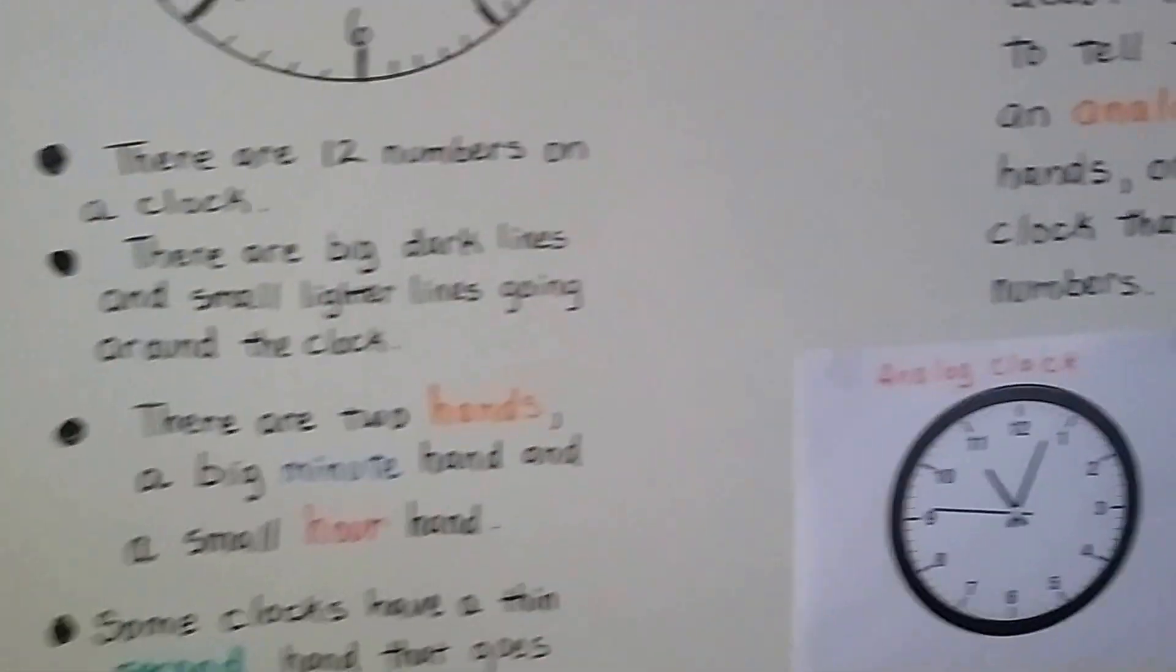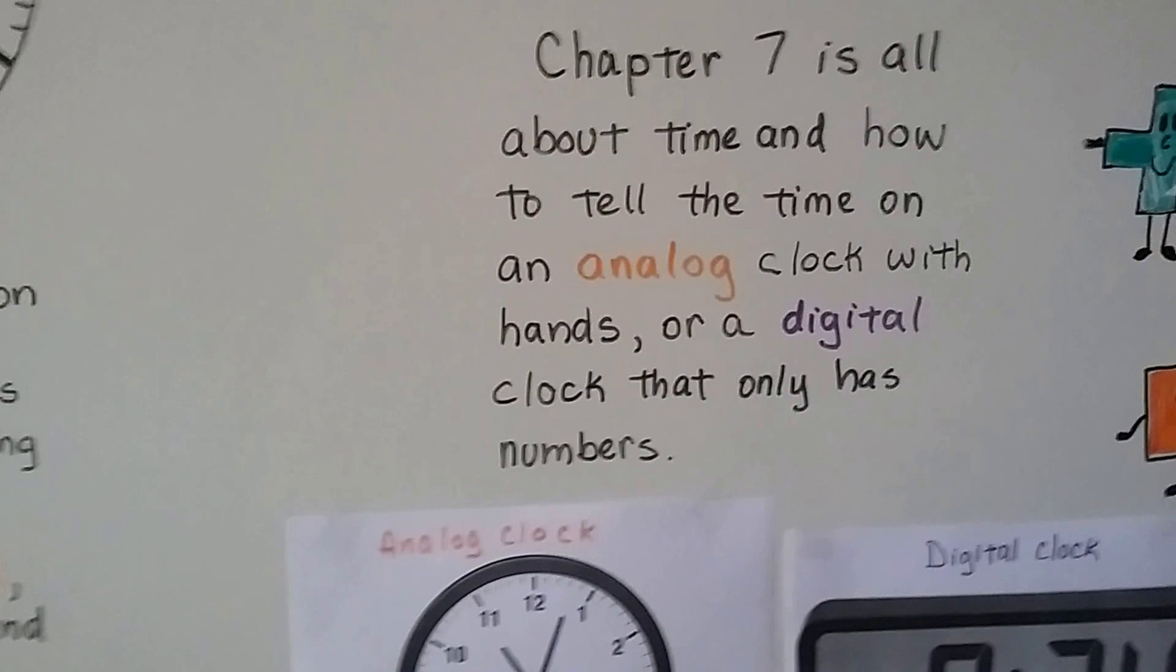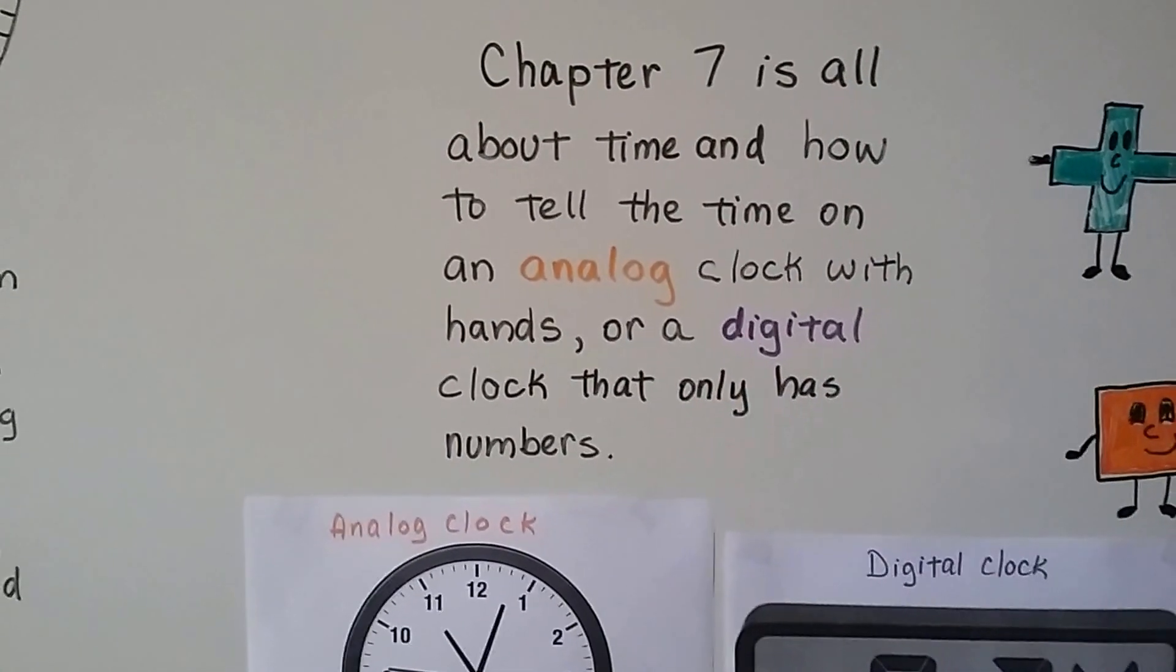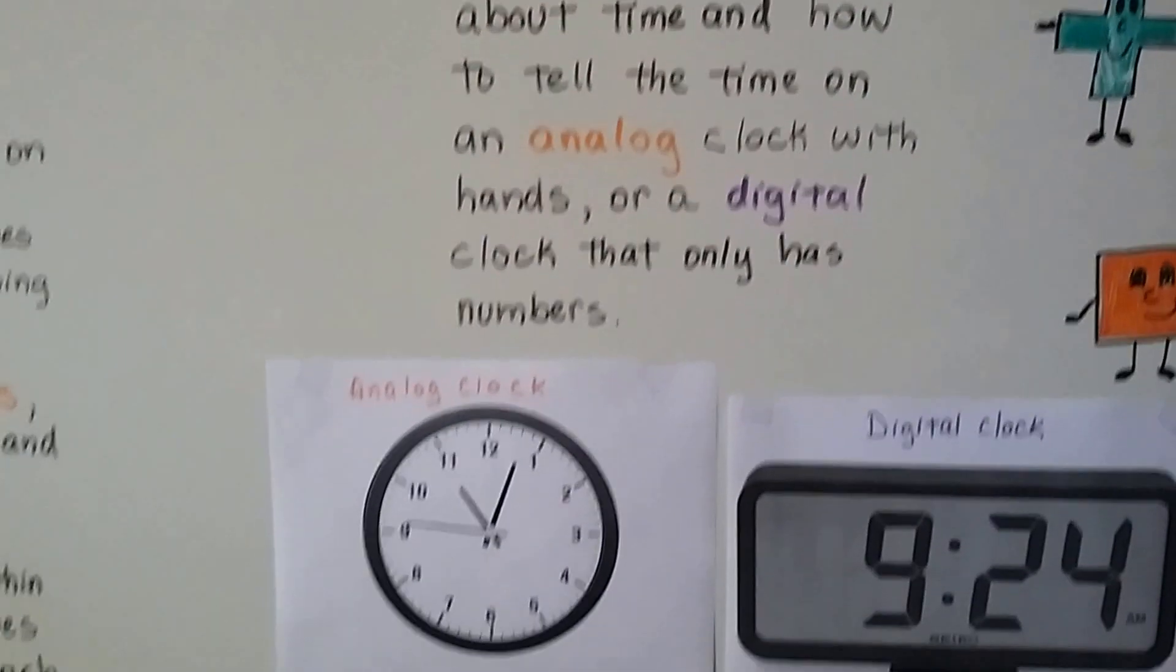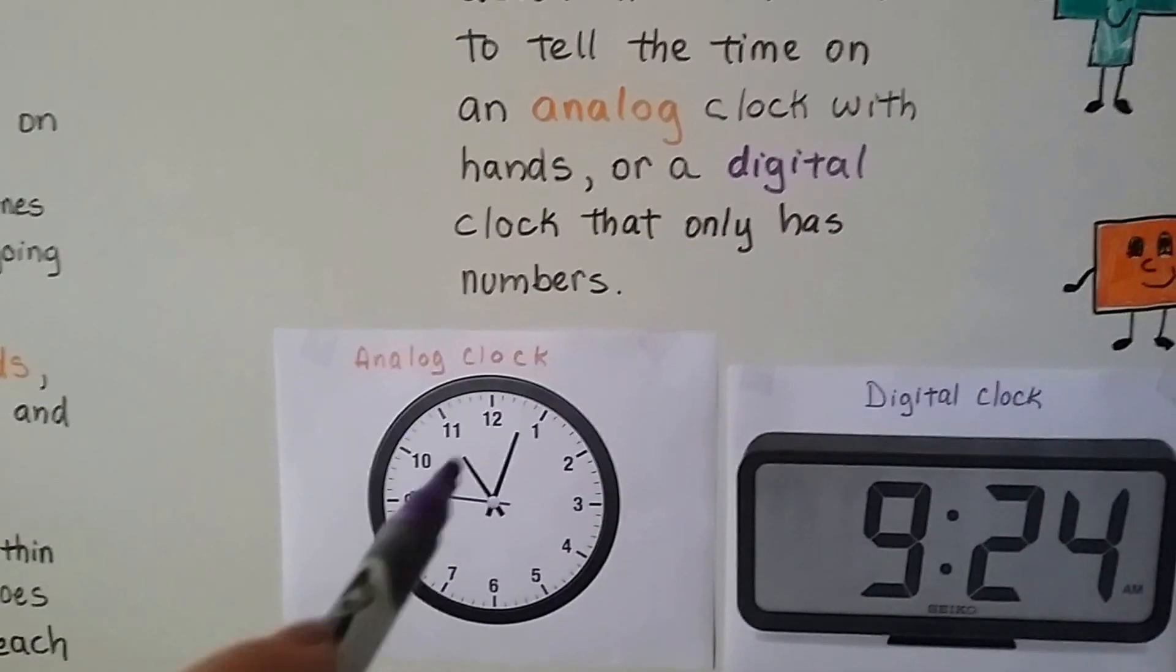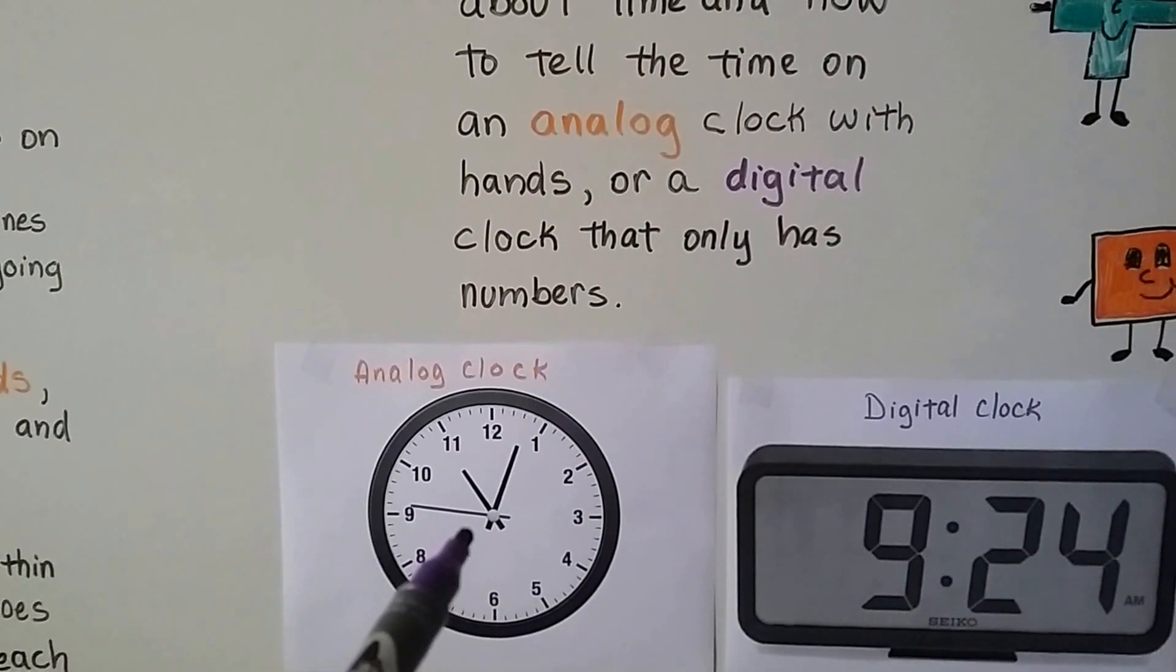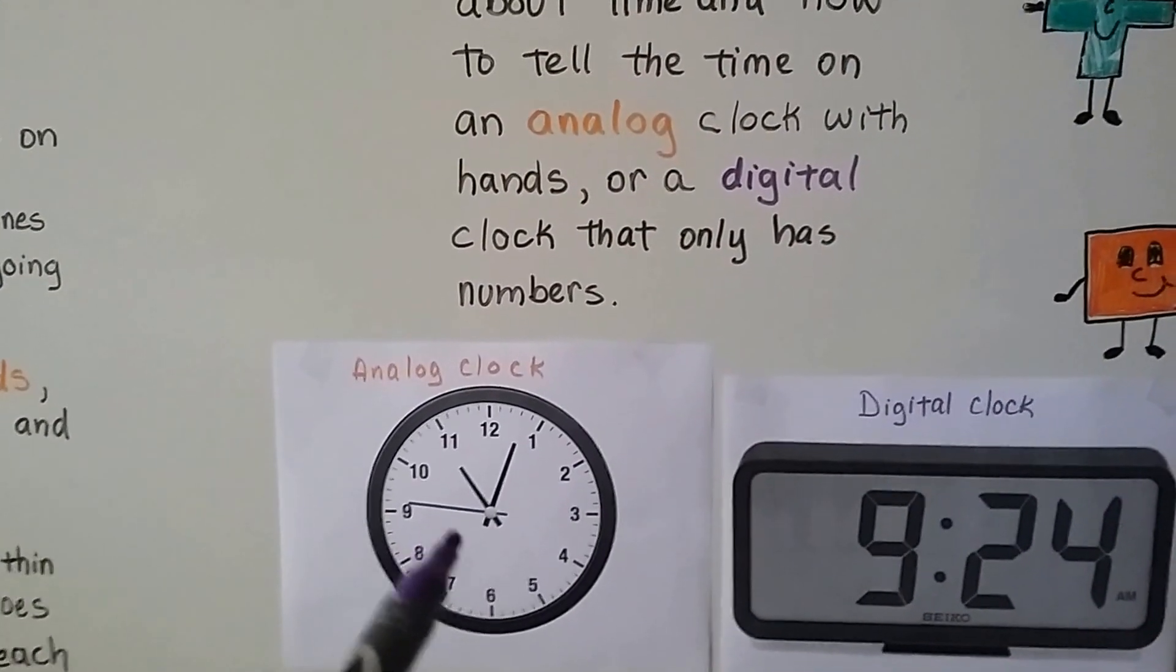All right? So I'm not expecting you to learn this all right now. This is just an introduction. So chapter 7 is all about time and how to tell time on an analog clock. A clock that has hands like this, and the numbers like this is called an analog clock.